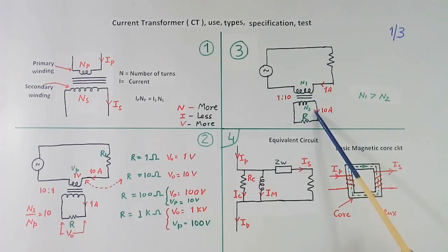But if you have special CT which you design for this way, primary turn is more than secondary. Then you will get high accuracy.